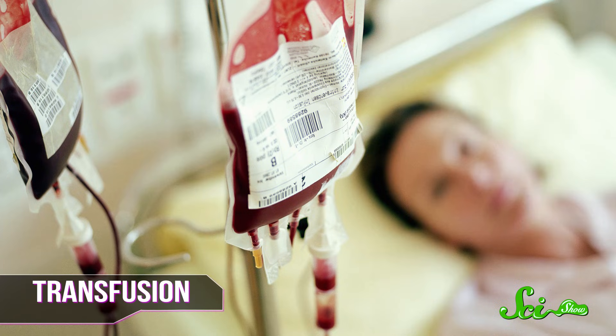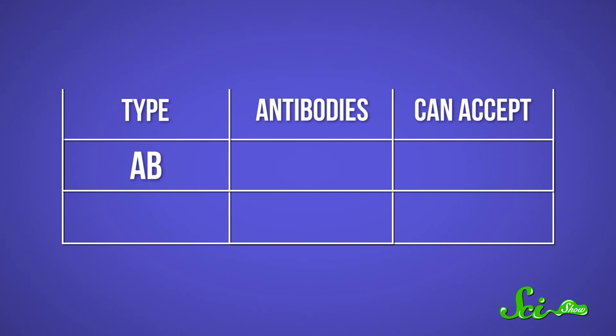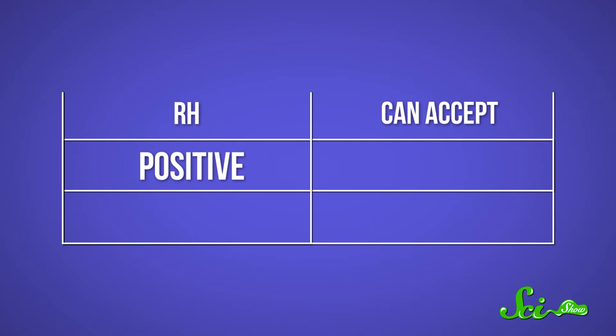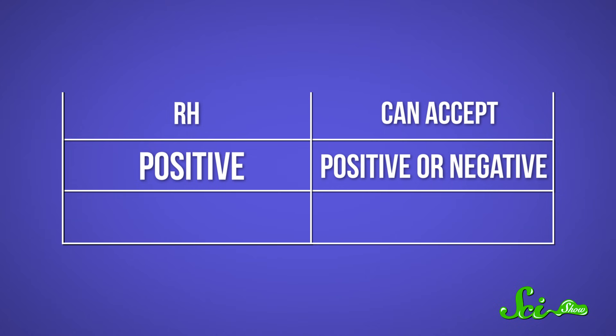When it comes to transfusing blood from one person to another, compatibility is kind of important to preventing a serious, possibly life-threatening reaction. Finding the right match has less to do with which letter you have than which letter you have the antibodies for. Type AB people don't have antibodies for either A or B, so they can accept A, B, AB, or O. But type O's have both A and B antibodies, so they can only accept other O's. As for the RH antigens, people with positive blood types can accept either positive or negative blood, but negative types are safest taking only negative blood — because while they can tolerate positive blood, they can do it only once.